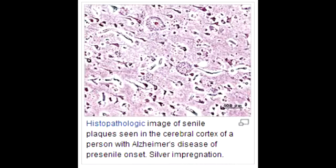Name the three altered proteins and their respective chromosomes that lead to early onset Alzheimer's disease. The three altered proteins include amyloid precursor protein (APP), located on chromosome 21; presenilin-1 protein, located on chromosome 14; and presenilin-2, located on chromosome 1.